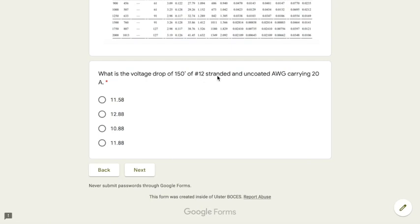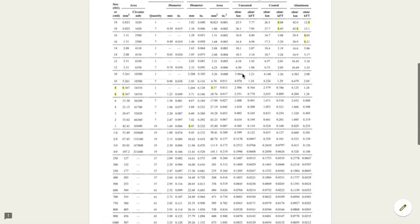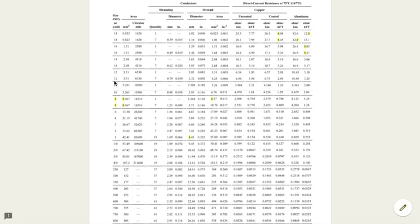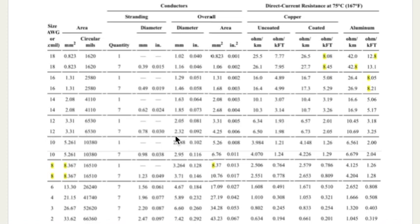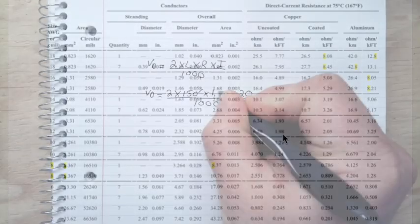12, stranded and uncoated. So I'm going to go up to number 12, and remember stranded will be the second one, and we're going to go uncoated, which will be this side. So it looks to me like I'm looking at a 1.98 right here. So I'm going to plug that in, 1.98.